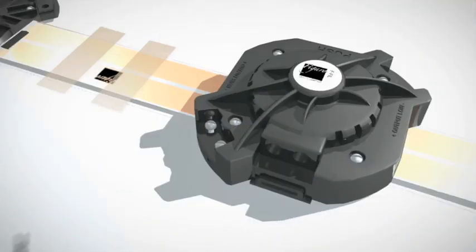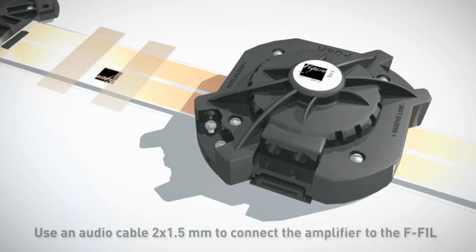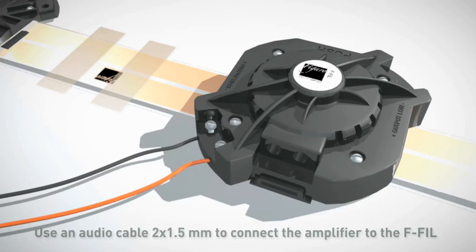Use an audio cable 2x1.5mm to connect the amplifier to the F-FIL, max input 50W at 4Ω.